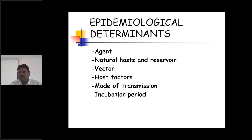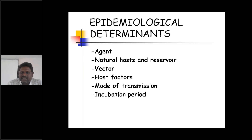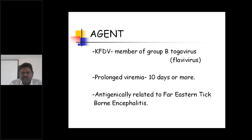The epidemiological determinants include agent, host, animal vectors, host factors, modes of transmission, and incubation period. Looking at the agent — the KFD virus is a member of Group B toga virus, that is Flavivirus, and is mainly responsible for causing this disease.